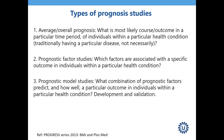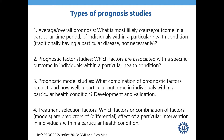The third type is prognostic model studies, which focus not on individual factors but on the combination of factors into a single model to predict a particular outcome in individuals with a particular health condition. These prognostic models need to be developed and subsequently tested in other individuals to assess how well they predict — this testing is called validation.